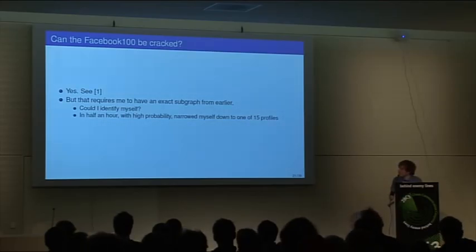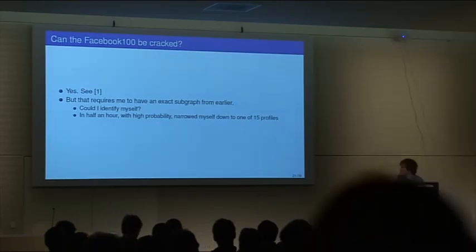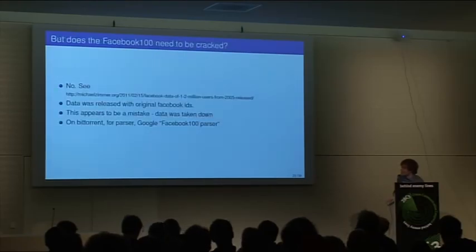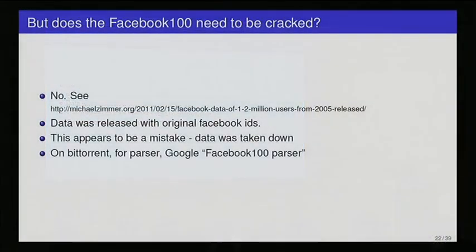So I tried to identify myself in this. I happened to be a college student at the time when the data was collected. And in half an hour I still wasn't able to find myself. I narrowed myself down to about 15 people. Then I just went to Google. And it's not really necessary to crack this data. Google, one of the first hits said there seems to be a mistake with this data. The original Facebook IDs, there was one more node attribute called ID. This probably wasn't supposed to be in the original data set because after this data set was released there was a modified version that was released, and that one was missing this ID attribute. And then Facebook asked them to take the whole thing down altogether.